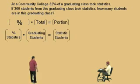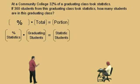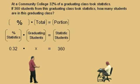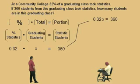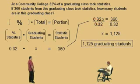Which one are we looking for — the percent, the total, or the portion? The total, because the total graduating students is what we're looking for. So our percent statistics as a decimal is 0.32. Graduating students is our x. And our portion, the number of statistics students, is 360, because we know there are 360 statistics students in the total graduating class. Our equation is 0.32x equals 360. Divide both sides by 0.32 — those cancel, and we get x equals 1,125. That's the total graduating class.